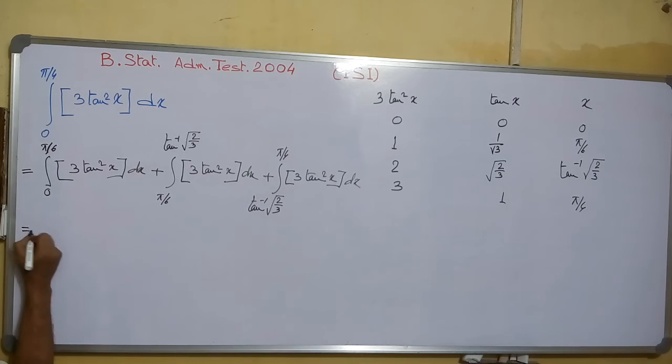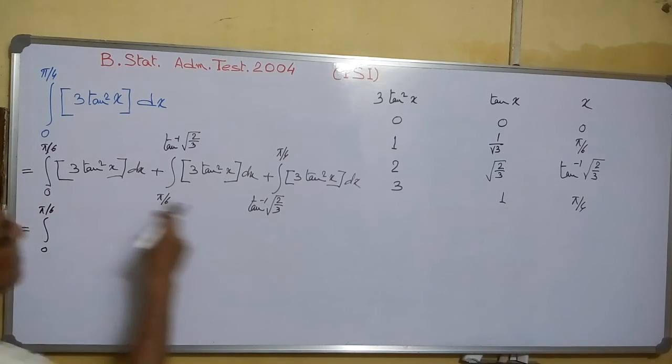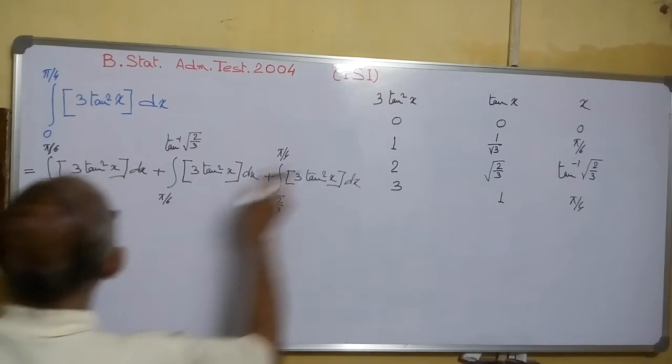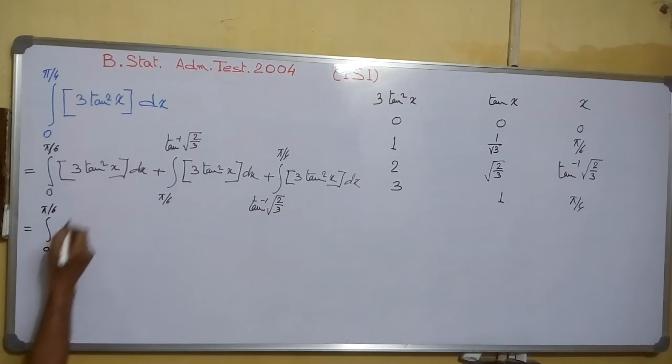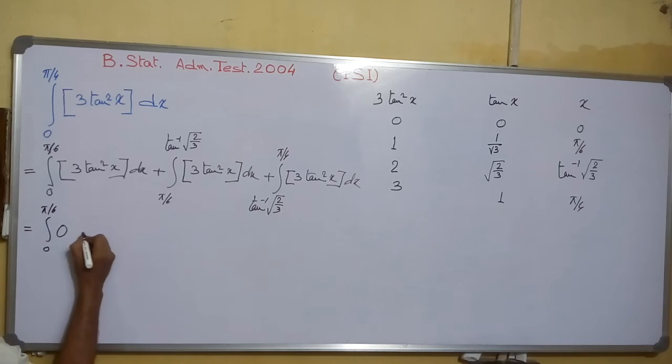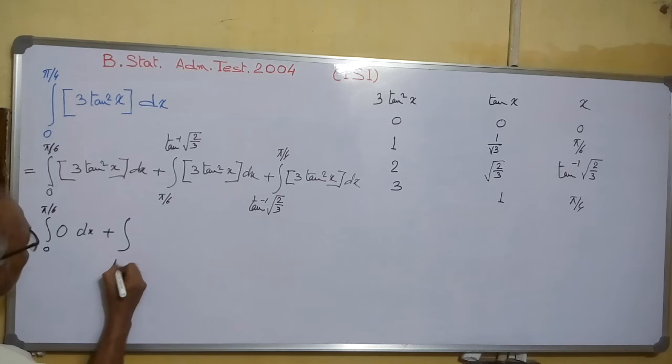So 0 to π/6, as we have shown, seen it, 0 to π/6, that is at π/6 it is 1. And between 0 and 1, this is 0.